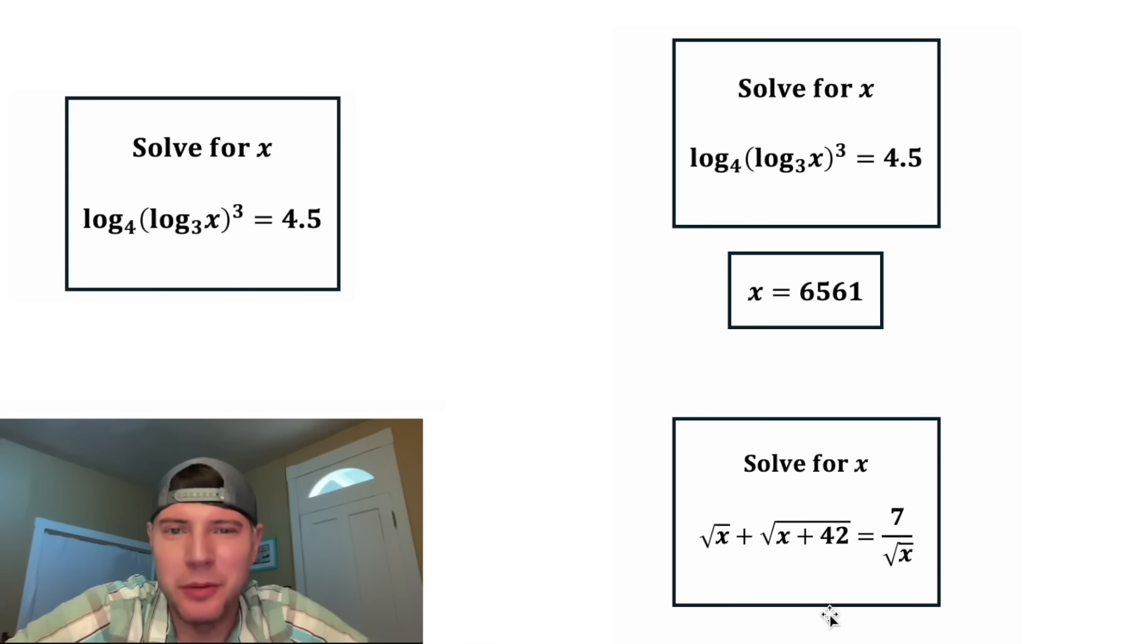And here's tomorrow's problem. We're given the square root of x plus the square root of the quantity x plus 42 equals 7 over the square root of x. This looks like a fun one. How exciting.